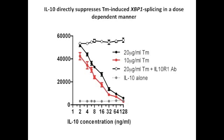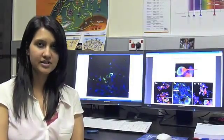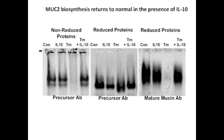Tunicamycin is an N-glycosylation inhibitor that induces ER stress. To determine the mechanism by which IL-10 suppresses ER stress, we analyzed mucus biosynthesis. The immunofluorescence microscopy shows here that there's an accumulation of Muc2 precursor and a loss of mature Muc2 in the tunicamycin-treated cells, which was prevented by IL-10. We analyzed the mucin proteins by agarose gel electrophoresis western blotting using the precursor and mature Muc2 antibodies. Tunicamycin-induced Muc2 protein misfolding forms an aggregate that does not enter the agarose gel under non-reducing conditions, accompanied by the loss of mature Muc2 production.